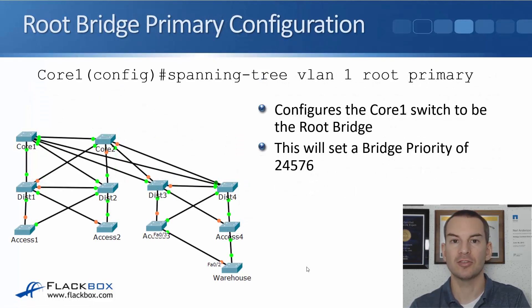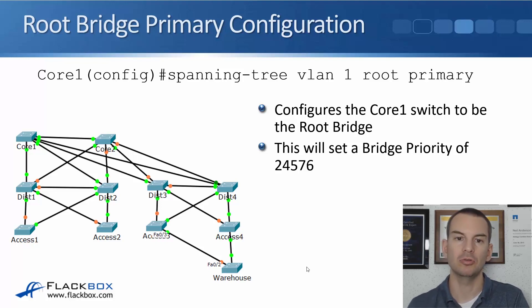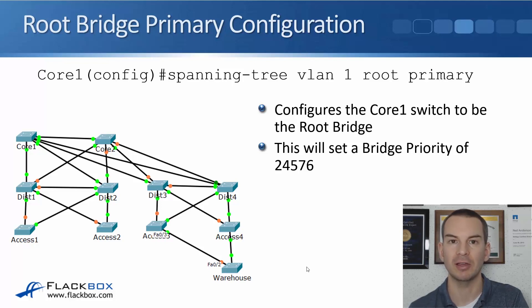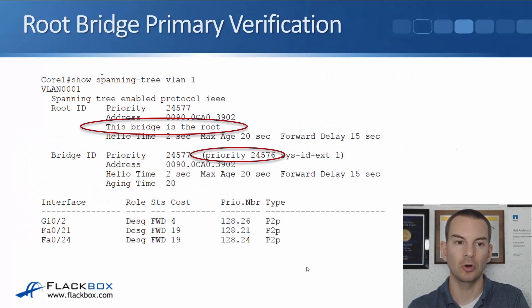What we should have done was configure the root bridge to be on one of our core switches so that all traffic goes through that path instead. The way you set this is a global config command on the switch you want to be root: 'spanning-tree vlan 1 root primary'. You can have different switches being root bridge for different VLANs. When you put that command in, it sets a bridge priority of 24576, which is better than the default, manipulating the election so this switch will be elected root bridge.